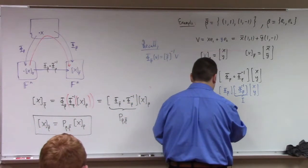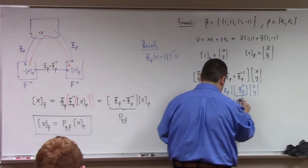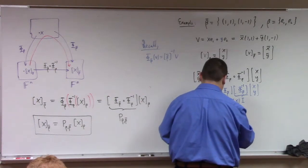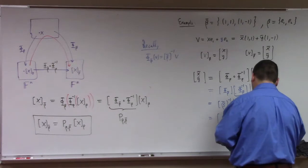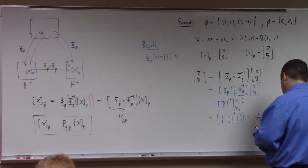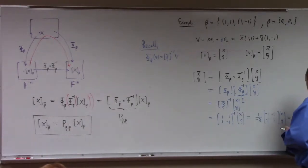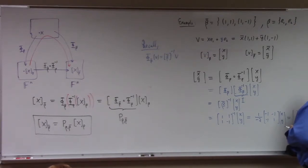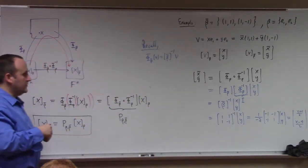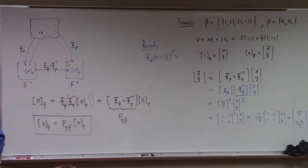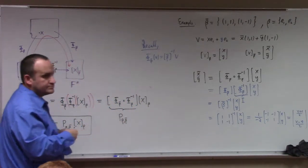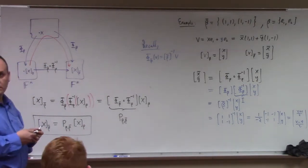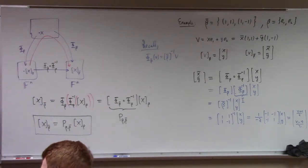So beta-bar inverse is the matrix [1,1; 1,−1] inverted. That gives 1 over −2 times [−1,−1; −1,1], which works out to: x̄ = (x+y)/2 and ȳ = (x−y)/2.